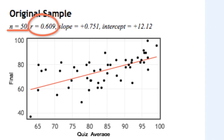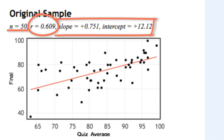StatKey has also computed the slope and intercept that we could use if we were interested in running a regression model. In this case, however, we're interested in the correlation between these two quantitative variables.